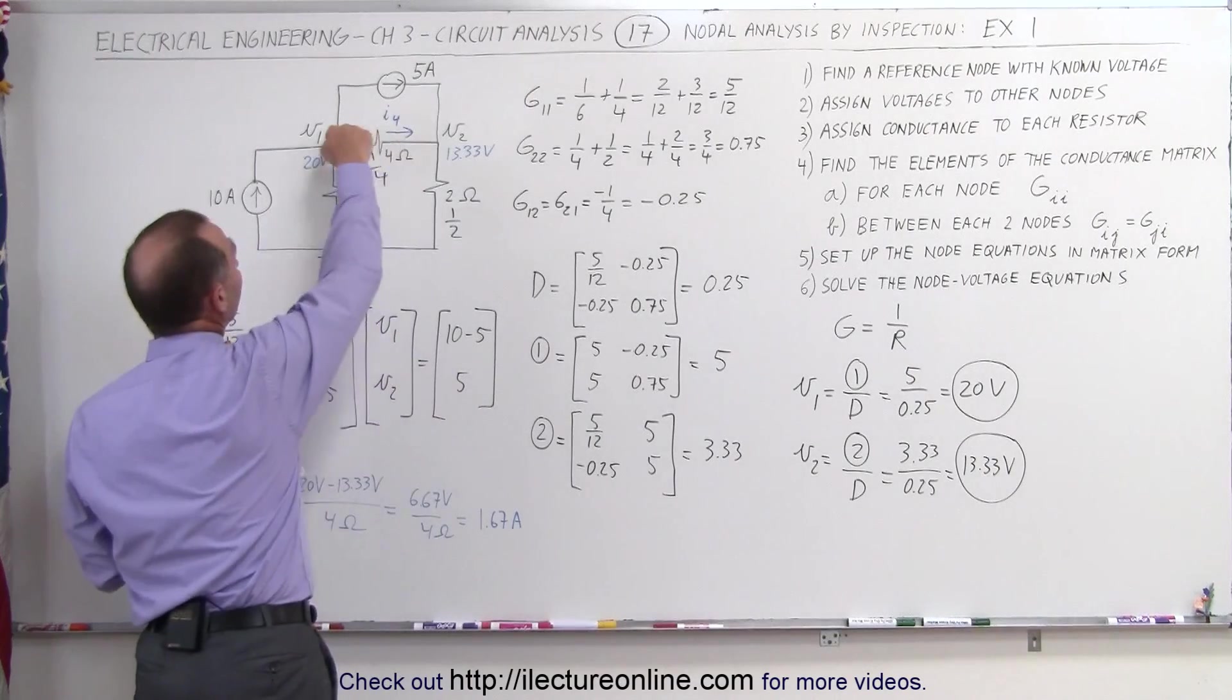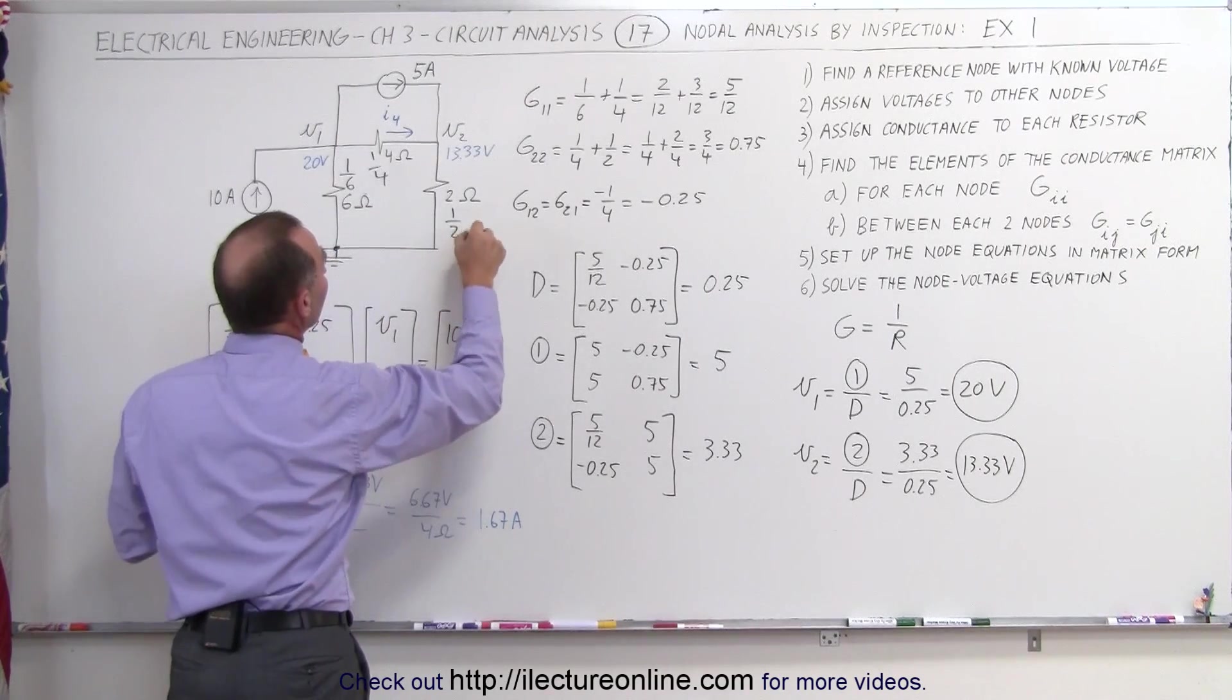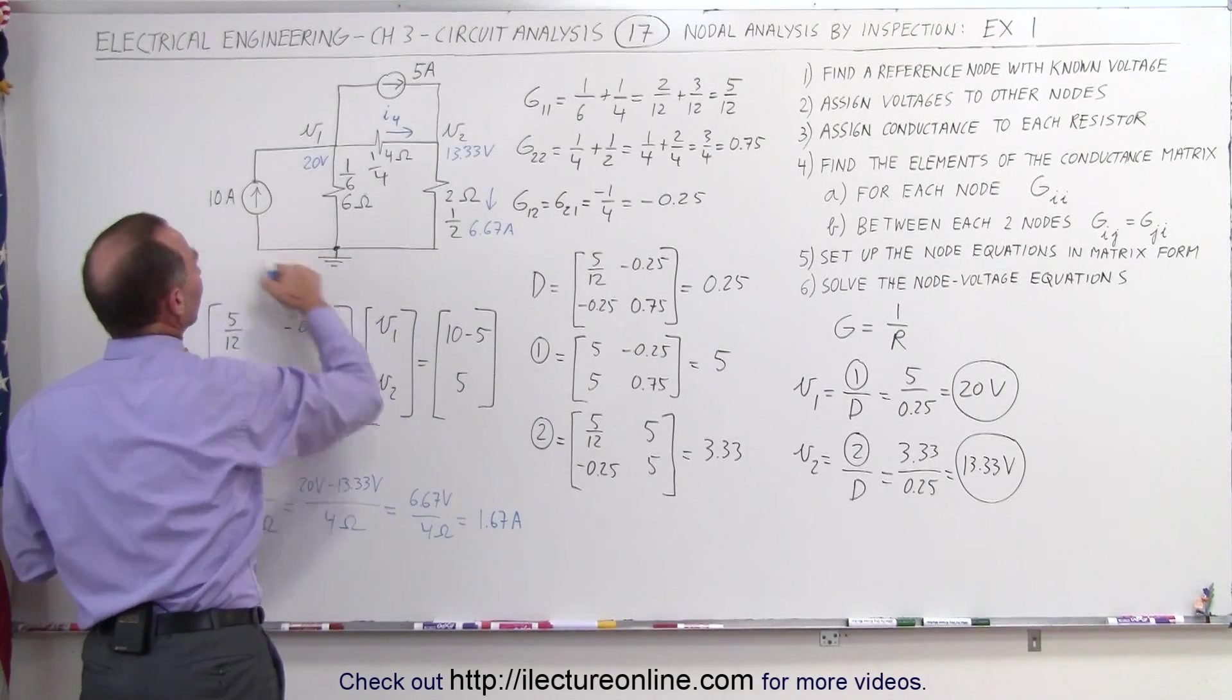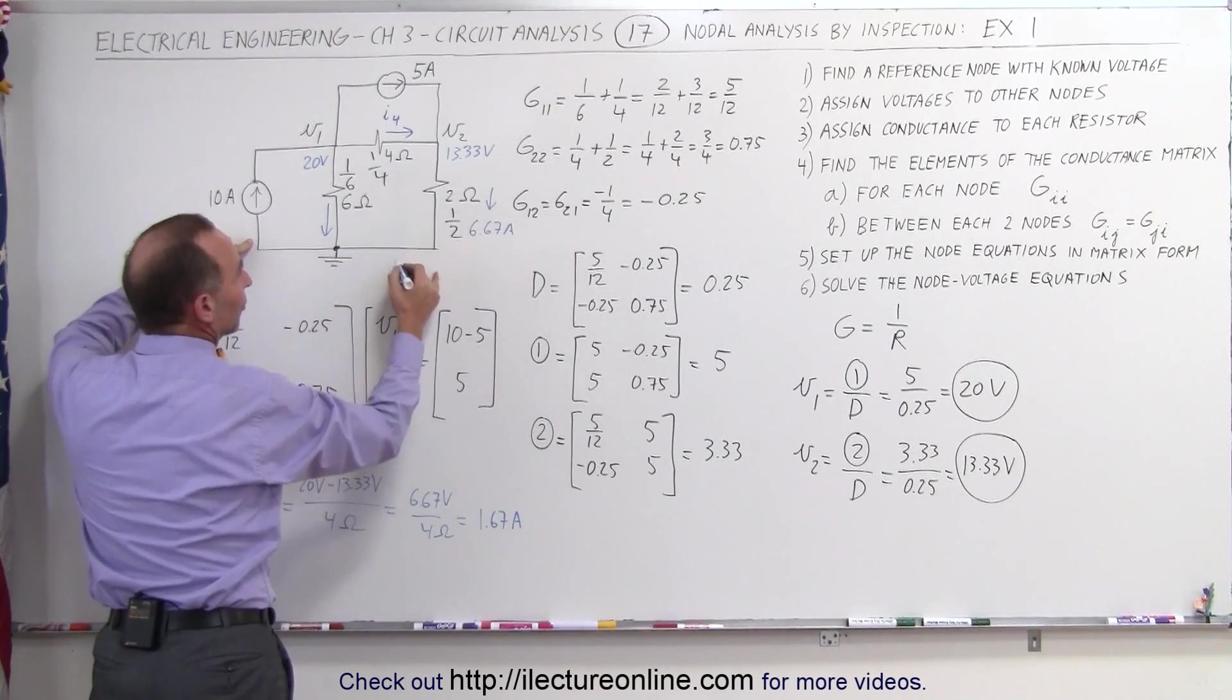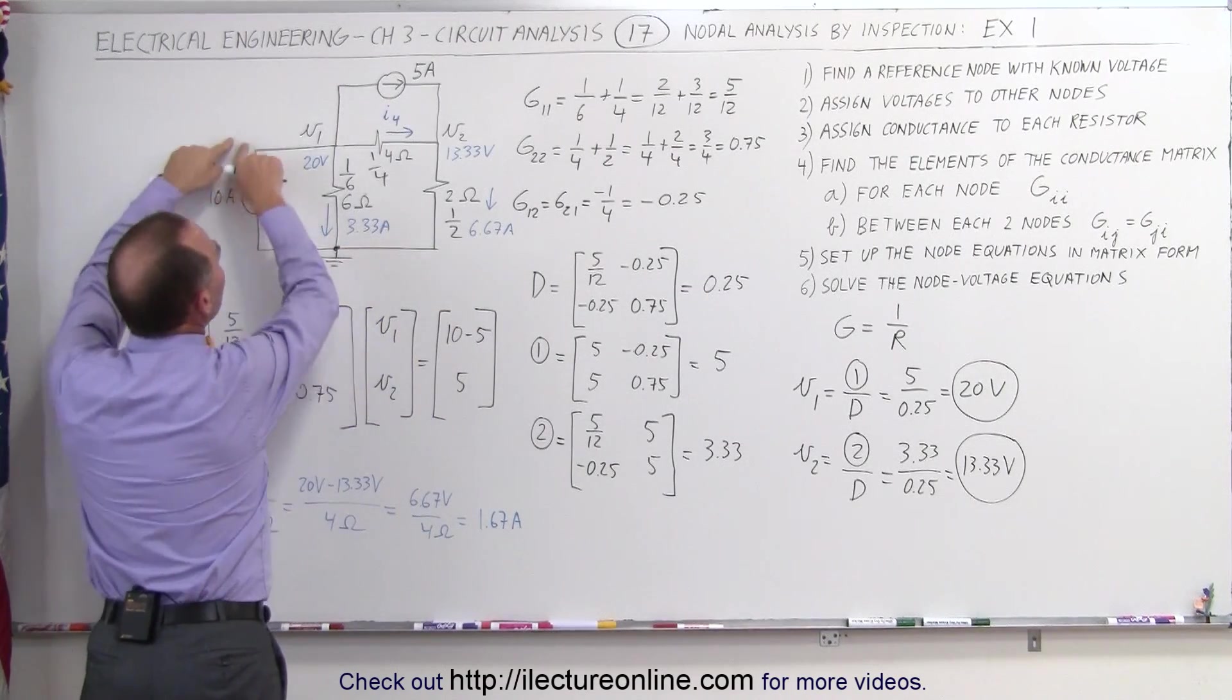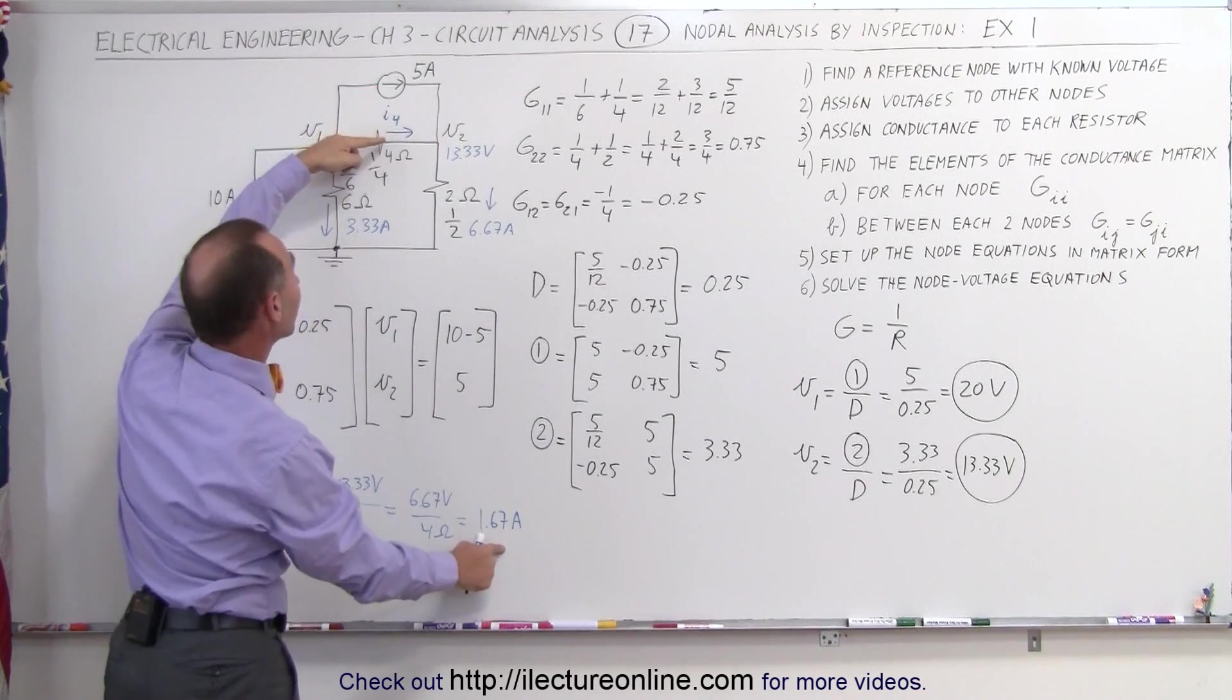Which means we have 1.67 amps flowing this way, 5 amps coming this way together through here. We can add those two together. That would be 6.67 amps in this direction. Come around the corner. We have 10 amps coming this way. That means we have some current. If this is 6.67 amps, that means 3.33 amps must flow this way. Add those two together, we get 10 amps coming here. We have 5 amps coming up here, 3.3 amps going this way, and I4 will be equal to 1.67 amps.